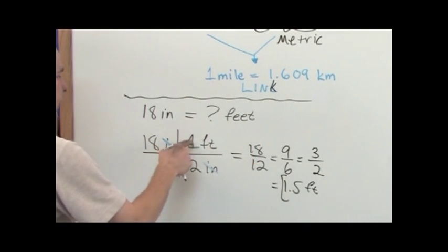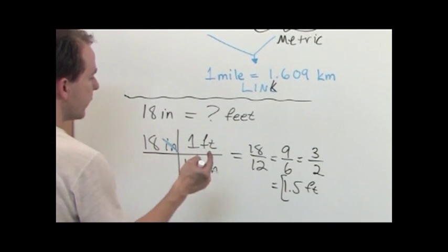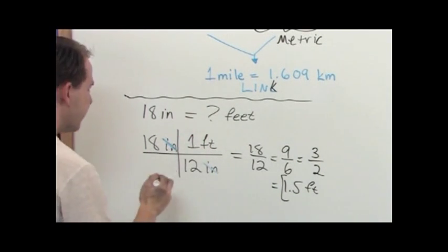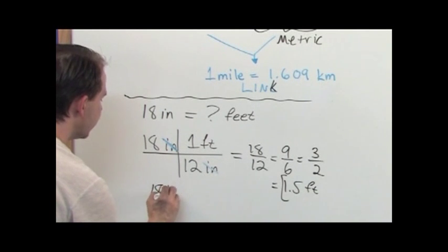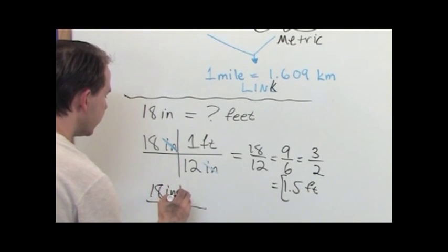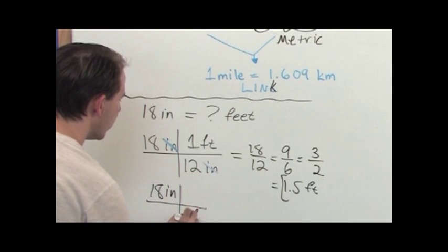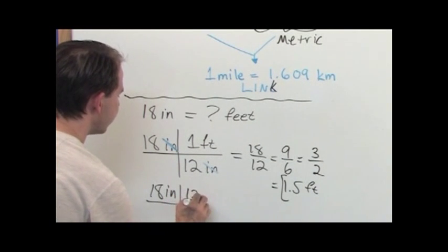Now I can arrange that conversion factor any way I want. I could have written one foot is equal to 12 inches, or I could have written one foot on the bottom is equal to 12 inches. But if I had written it, let me show you the wrong way to do it.